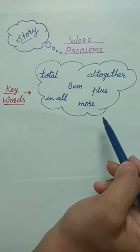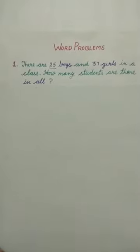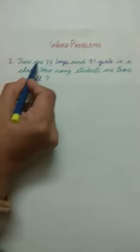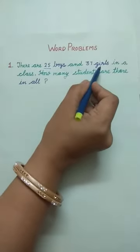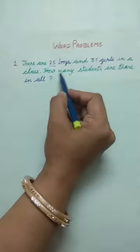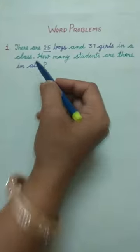Now, let's understand how to solve an addition word problem. Here we have a word problem: There are 25 boys and 37 girls in a class. How many students are there in all?